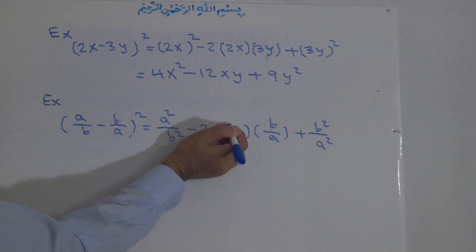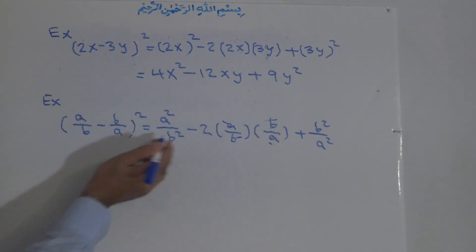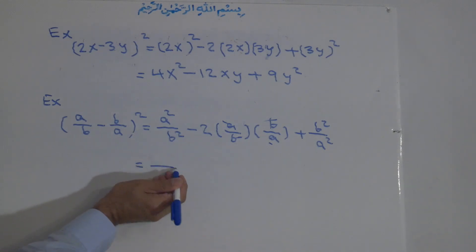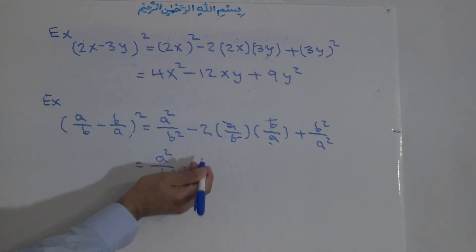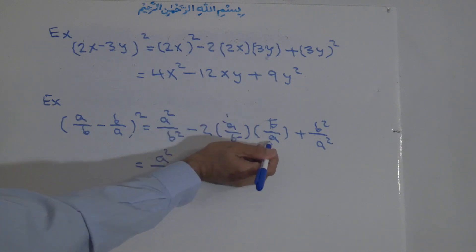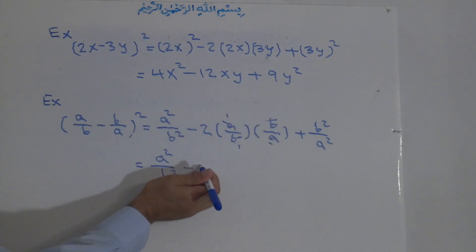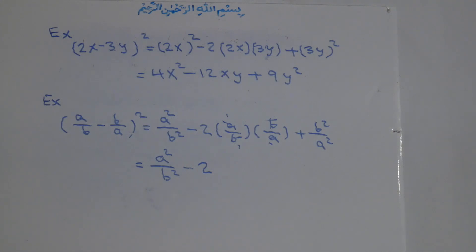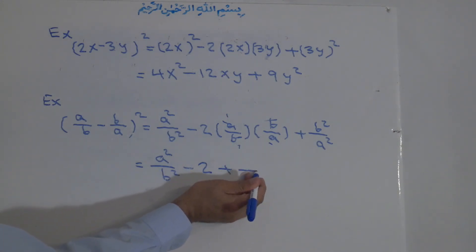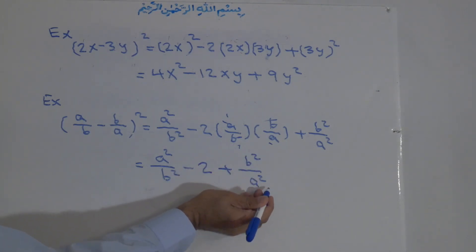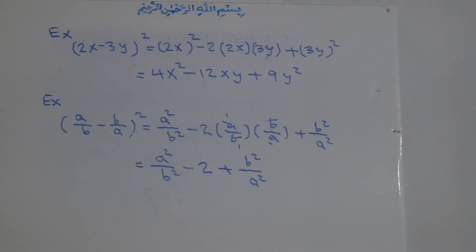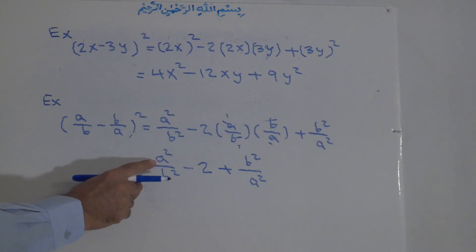Now we reduce: a cancels with a and b cancels with b, giving minus 2. The result is a to the power of two over b to the power of two, minus 2, plus b to the power of two over a to the power of two. So a over b minus b over a, squared, equals a squared over b squared minus 2 plus b squared over a squared.